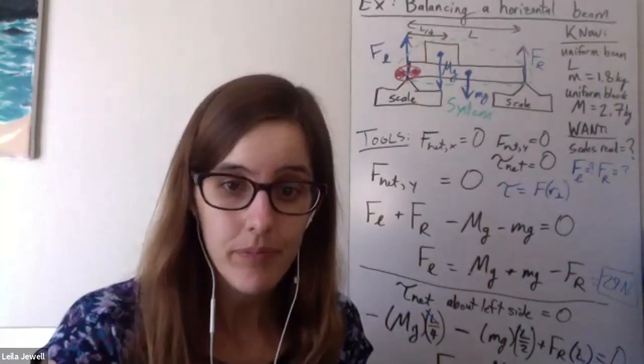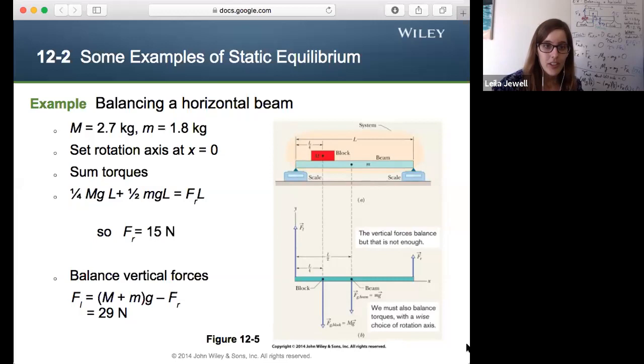So that pulls us through this example. You can see the abbreviated solution in the slides here. And there we have it. So balancing a horizontal beam using balance of forces, as well as balance of torques.